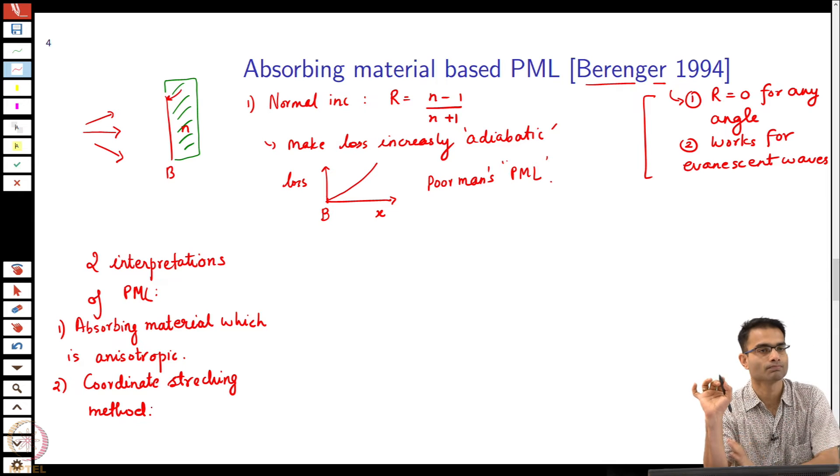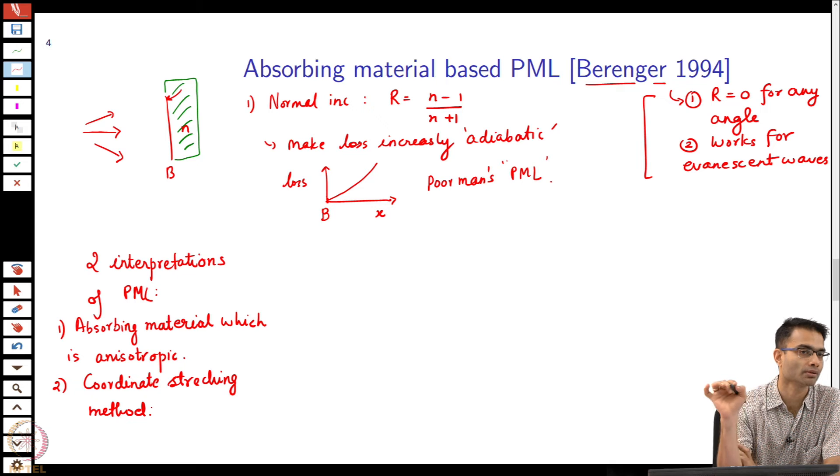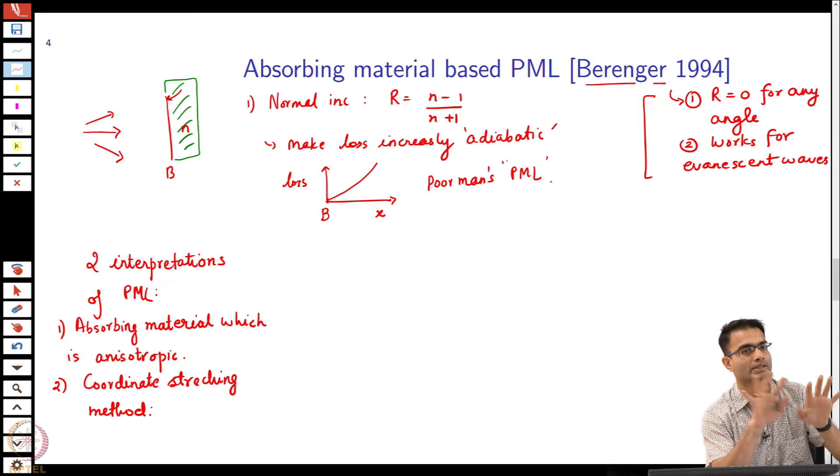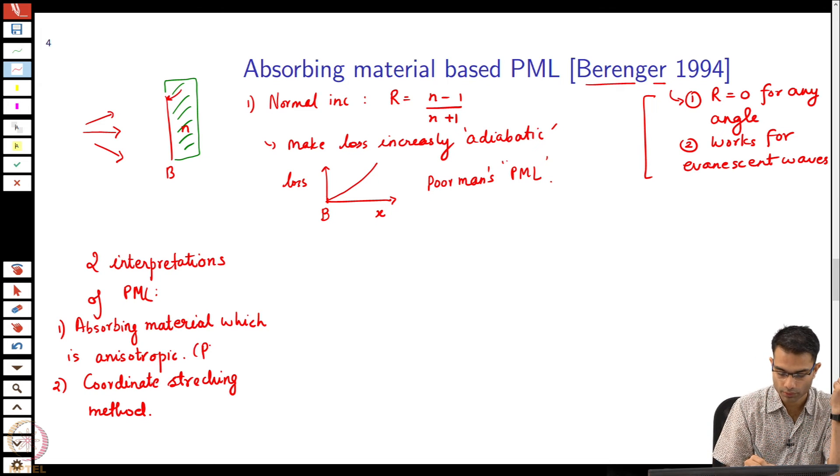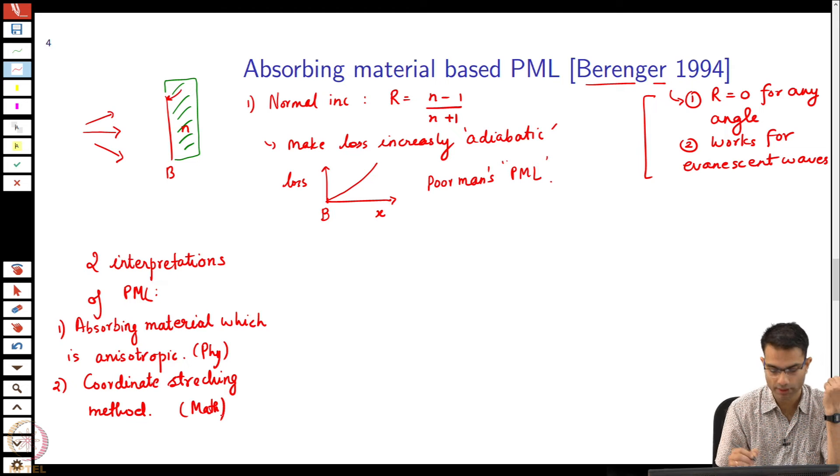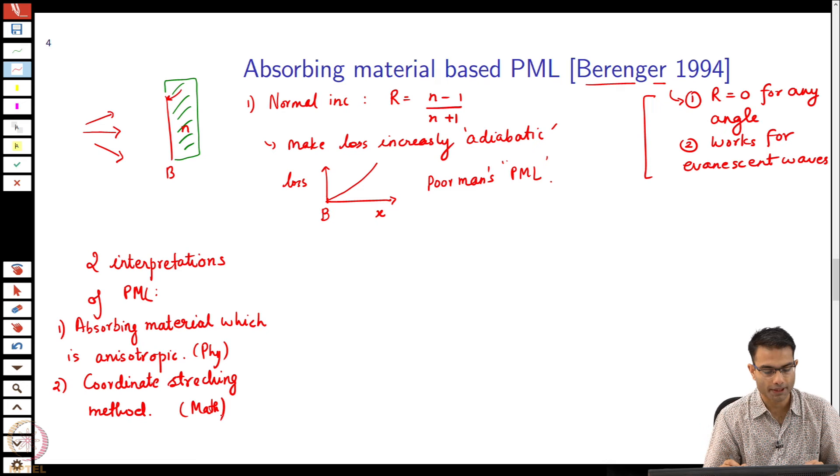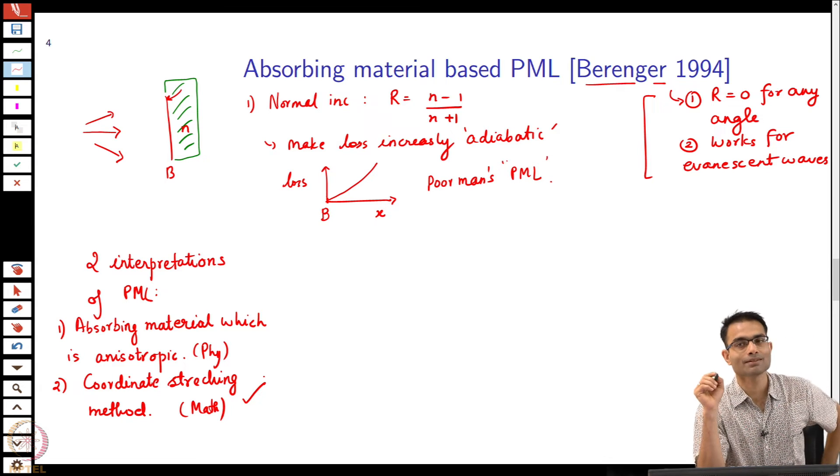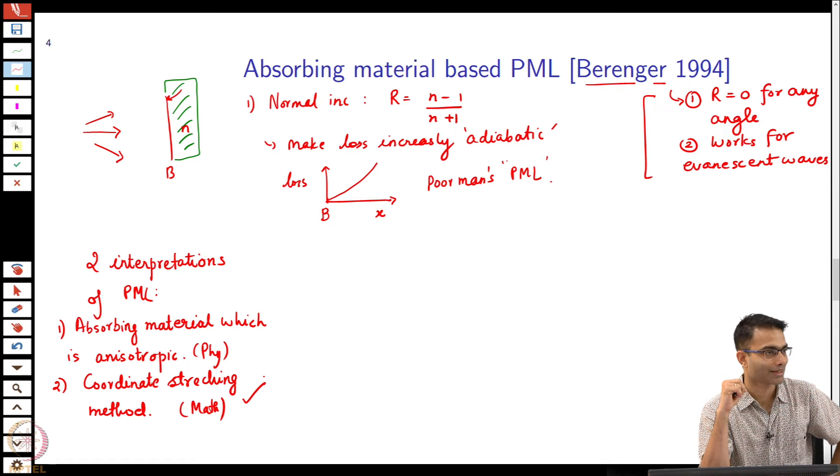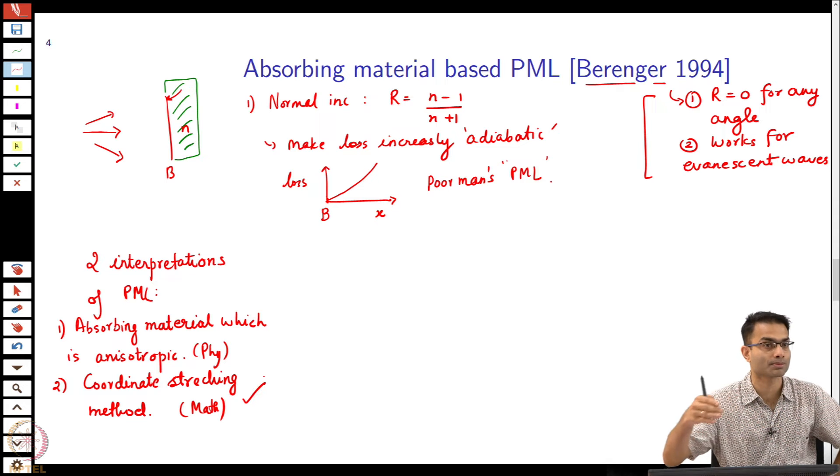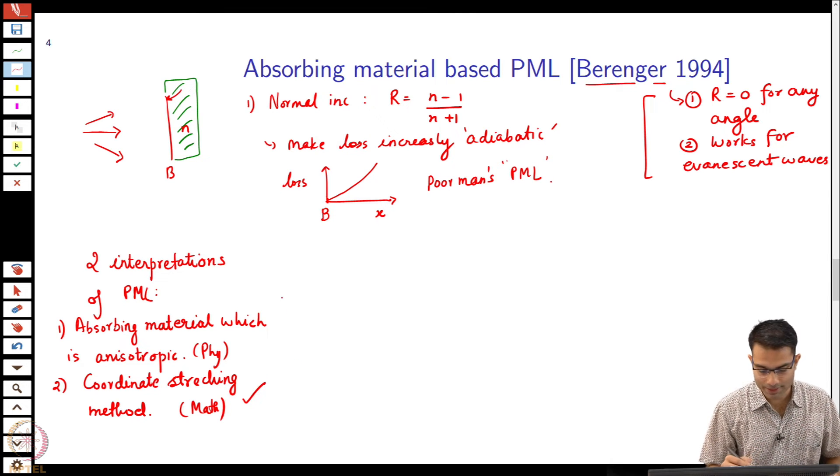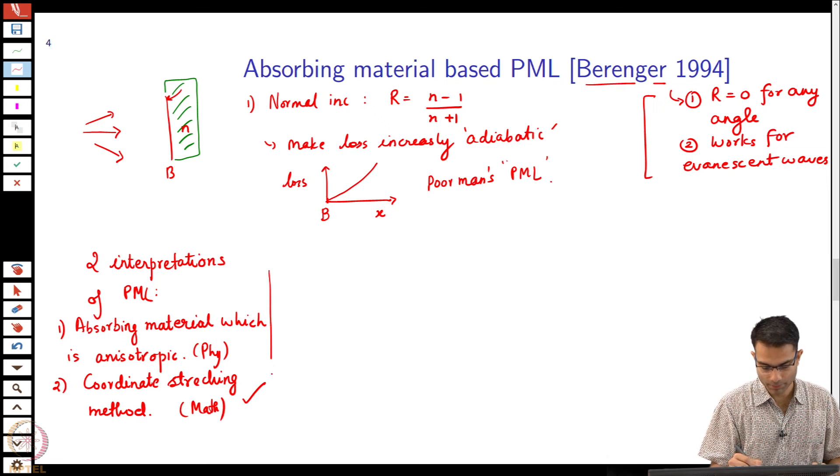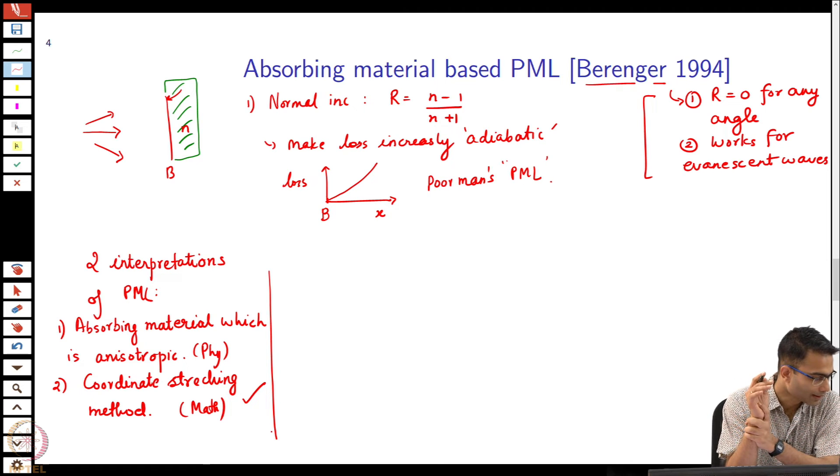The second interpretation is a more mathematical interpretation, which is called the coordinate stretching method. Both of these give the same values of your epsilon and mu for the PML. It is the same principle seen from two different ways. The first way is a physics-based way, the second way is a more math-based way. This is physics, this is math. Now, which interpretation are we going to choose? We are going to choose the math-based interpretation because the math gets easier if I choose this interpretation. The physics-based interpretation is very appealing, but the math becomes more complicated because the moment I have an anisotropic medium, then I have to start dealing with tensors and all of that. But this coordinate stretching is a very beautiful and simple way of arriving at this thing.